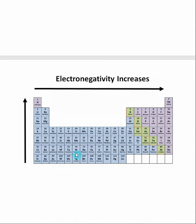So when we look at the periodic table, electronegativity increases as we go up and to the right. But remember, this trend falls apart when we get to the noble gases. What I like to remember is that the most electronegative element in the periodic table is fluorine.